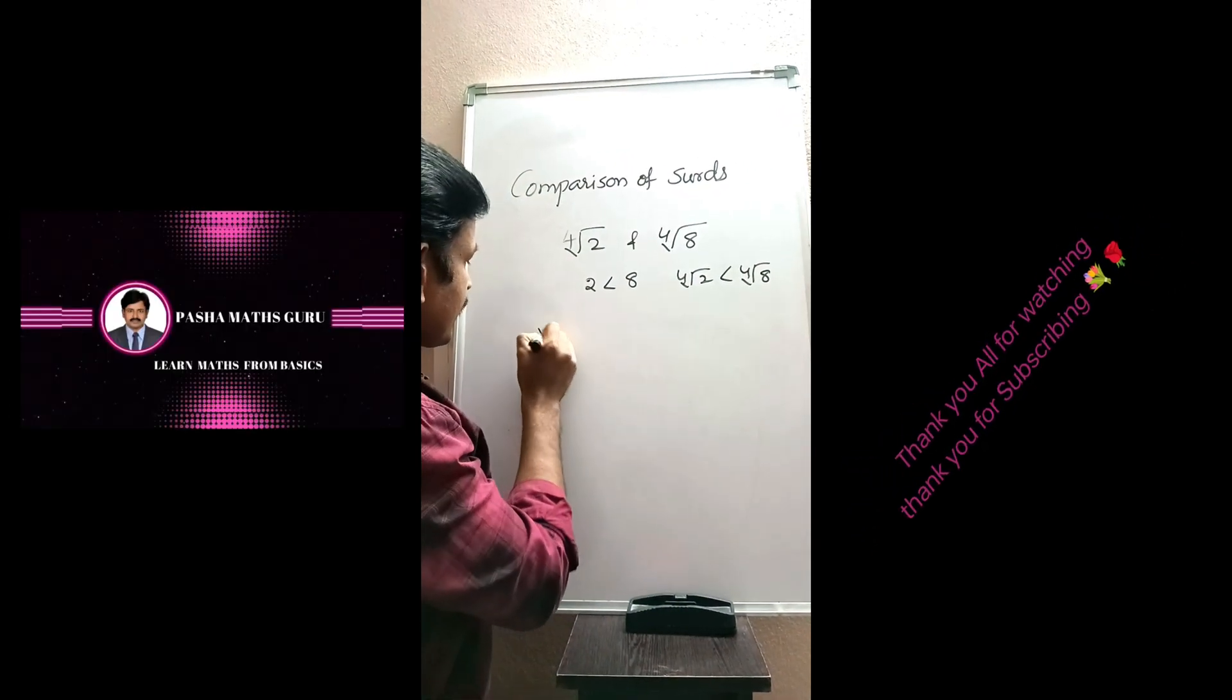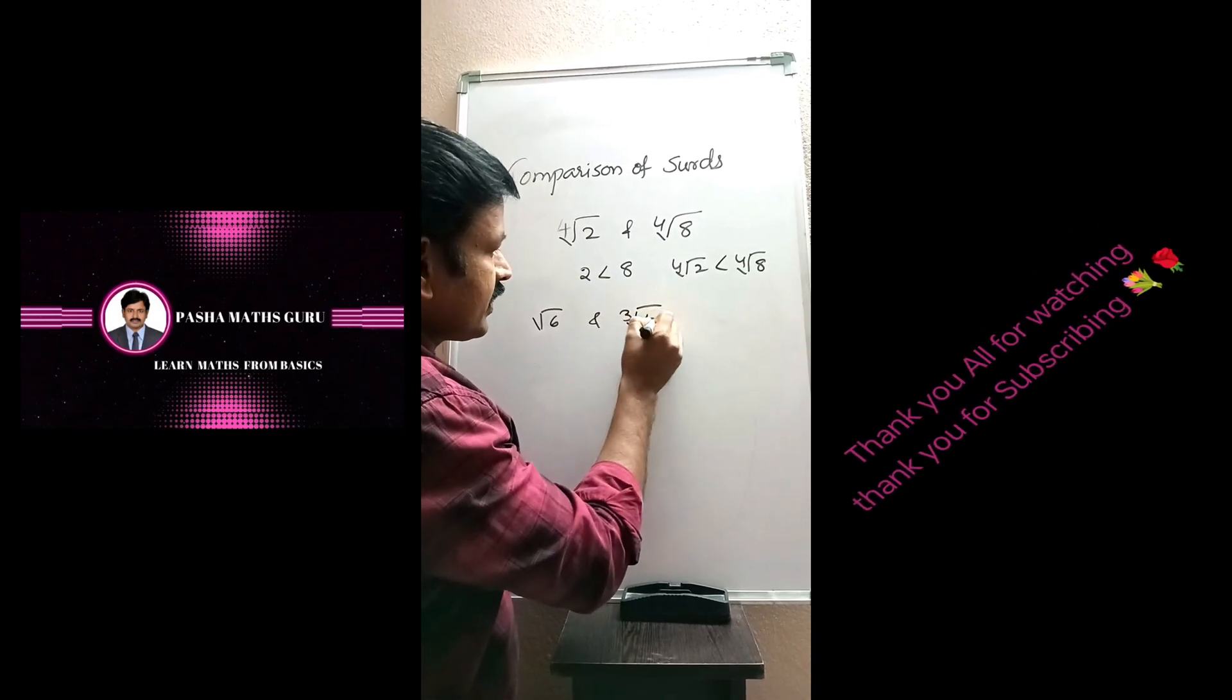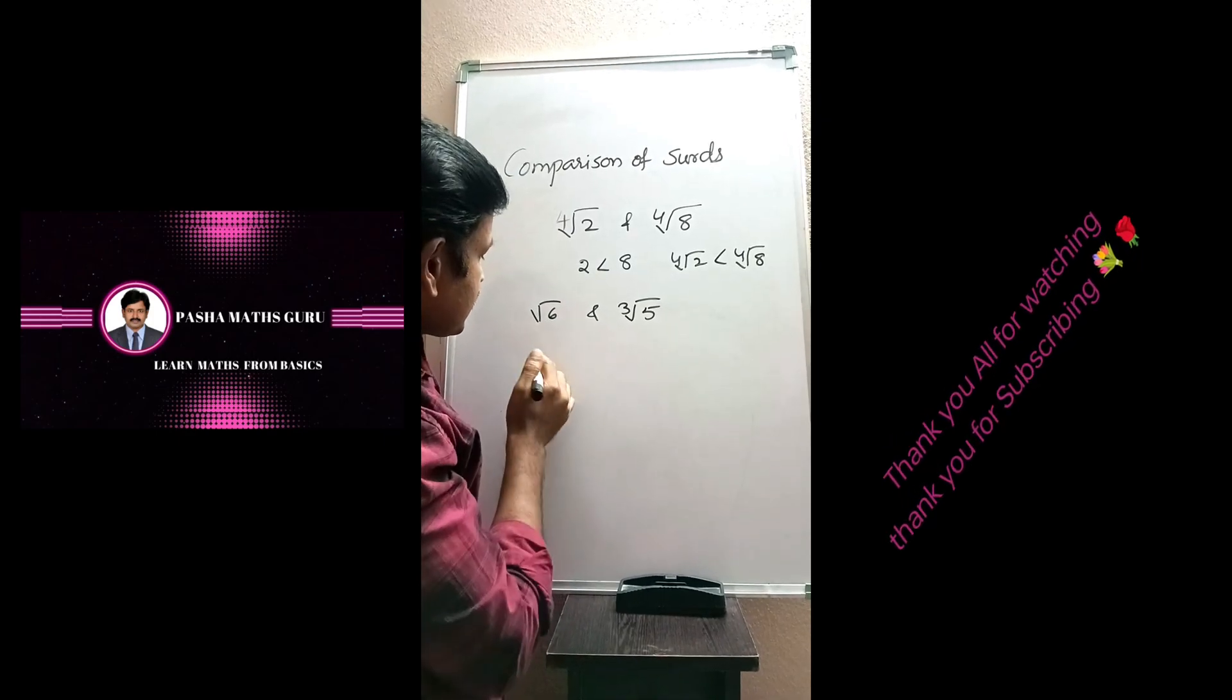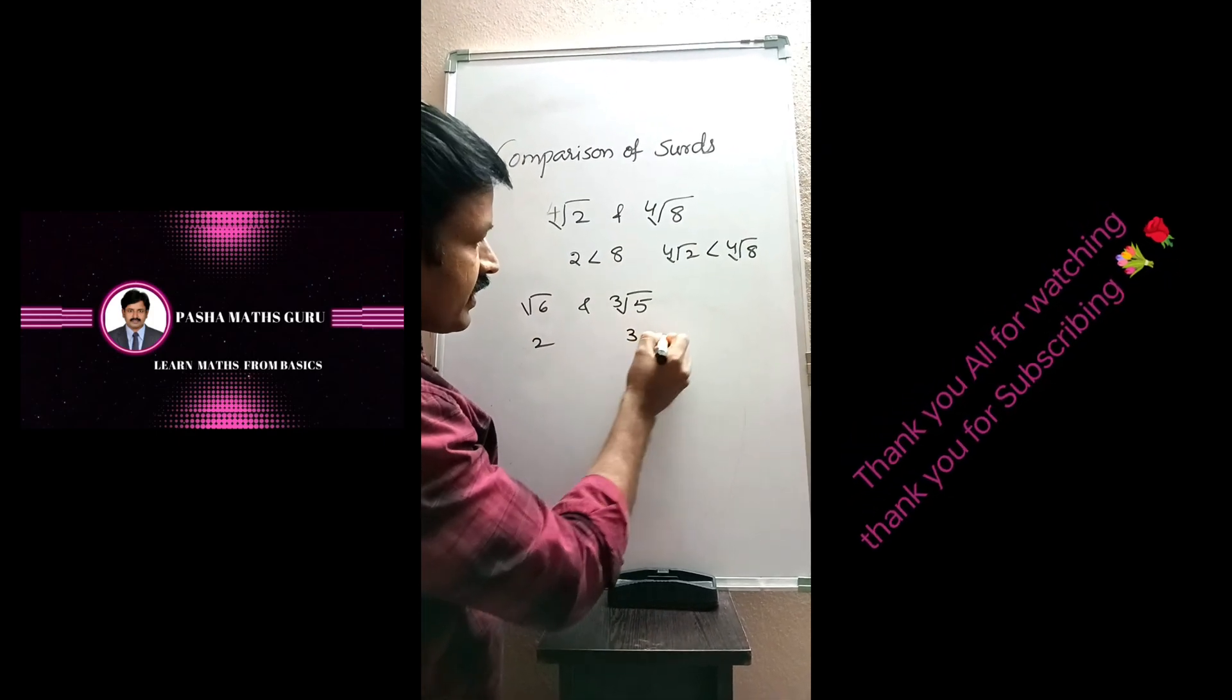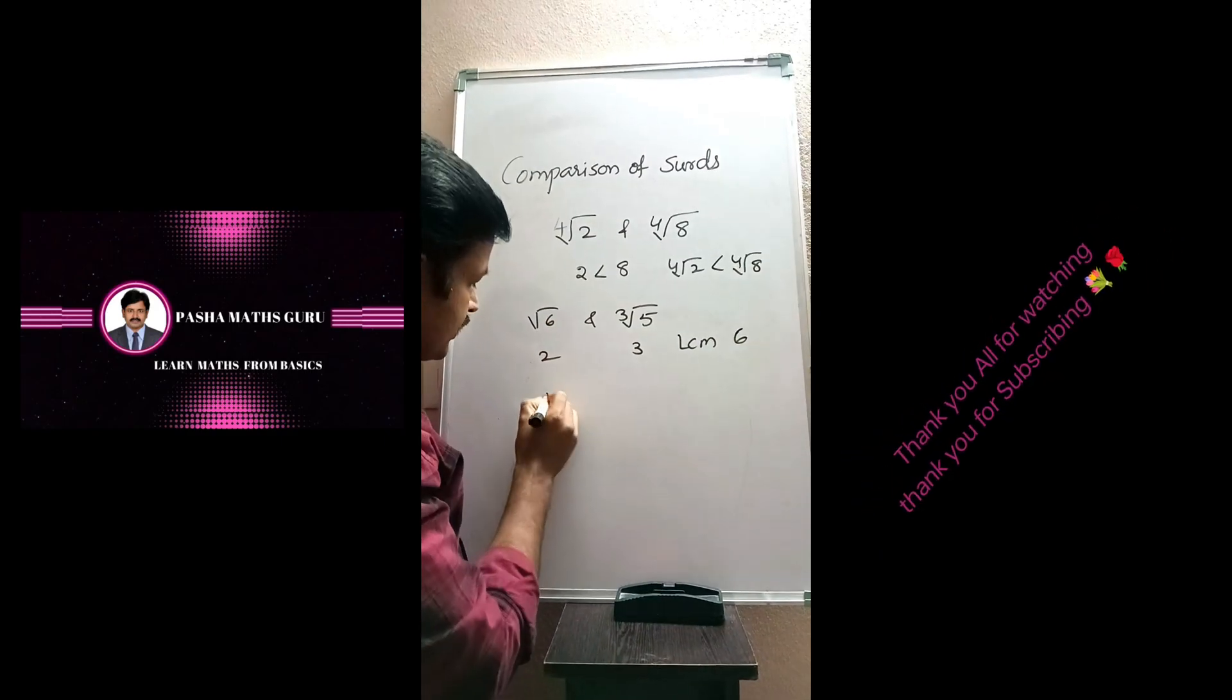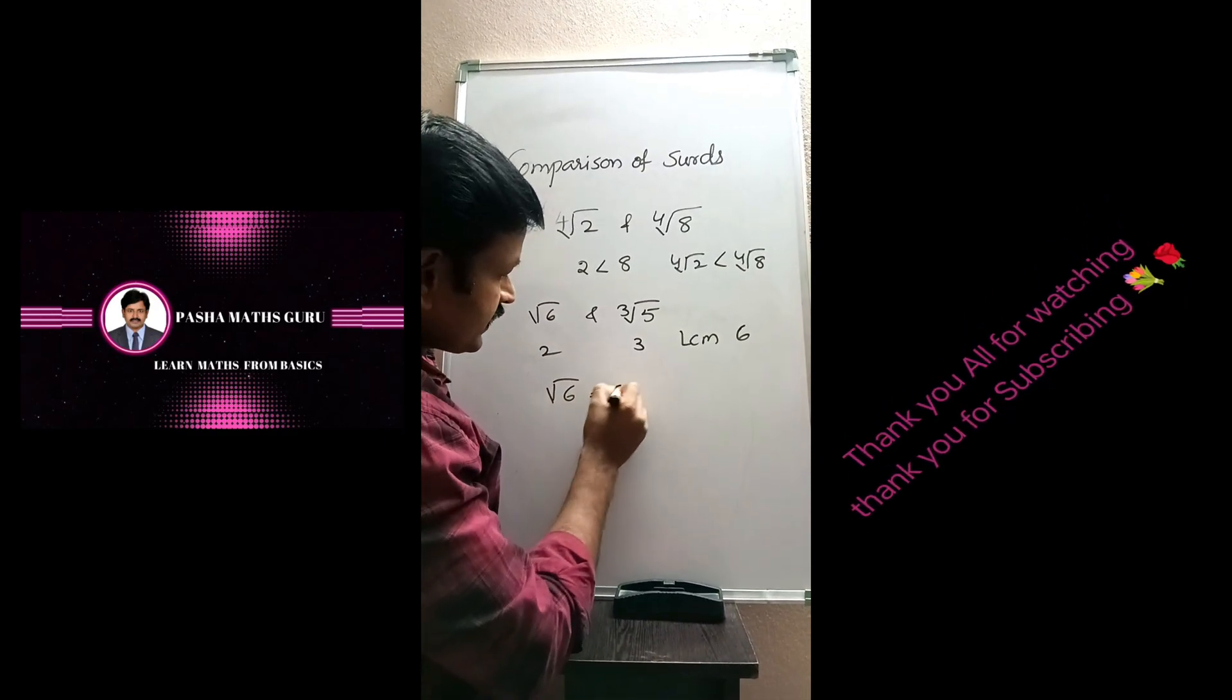Let us take another example. Square root 6 and cube root 5. Here, order of the first surd is 2 and order of the second surd is 3. And their LCM is 6. Change the LCM as common order for these two surds.